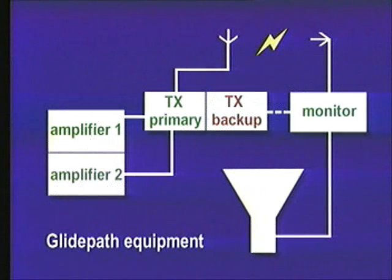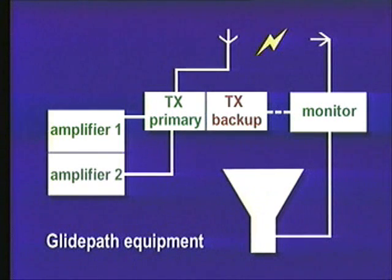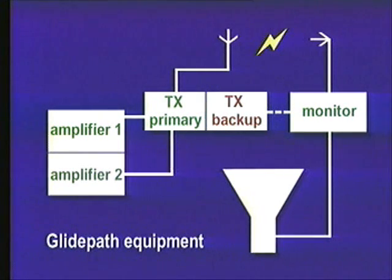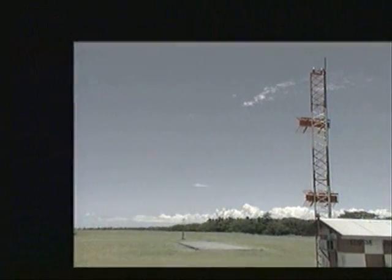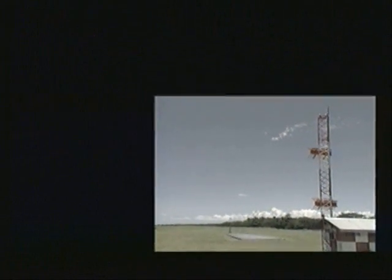The two glide slope amplifiers provide signals to the glide slope transmitter. The transmitter then routes the signals to two independent aerials. The two aerials that create the total glide path signal are located on a tower near the runway and abeam the touchdown point.